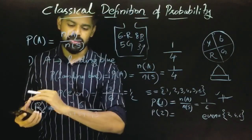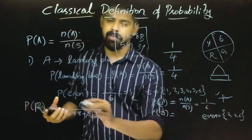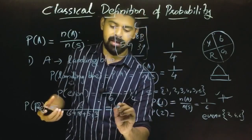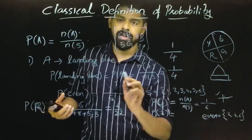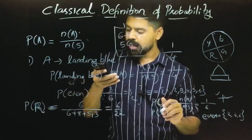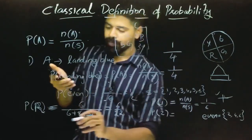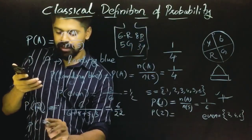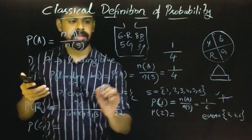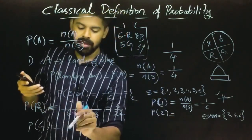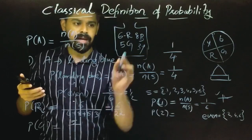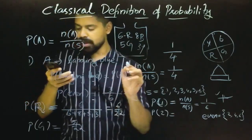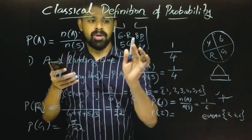The total number of balls is 22. The probability of red is 6 by 22. The probability of green: 5 is the number, so 5 by 22.